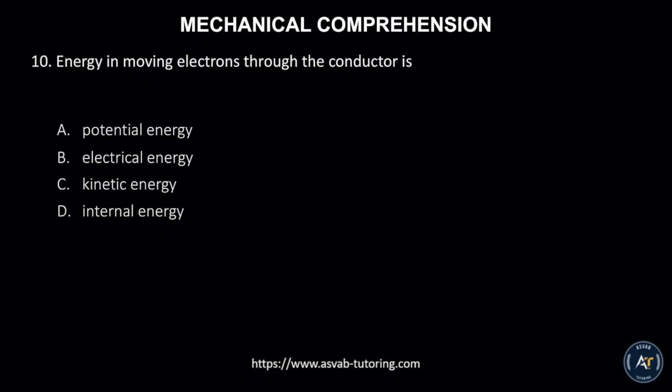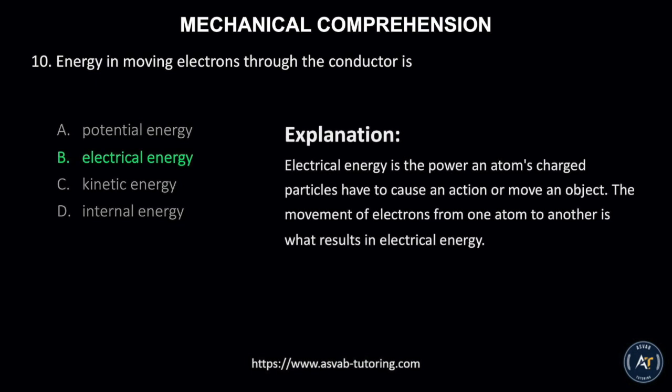Number 10. Energy in moving electrons through the conductor is: A. Potential energy, B. Electrical energy, C. Kinetic energy, or D. Internal energy. The correct answer is B. Electrical energy. This is because electrical energy is the power an atom's charged particles have to cause an action or move an object. The movement of electrons from one atom to another is what results in electrical energy.